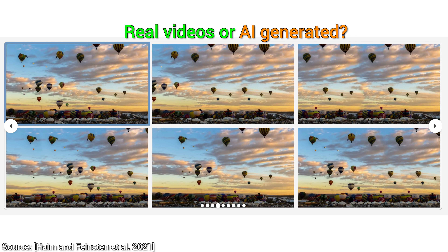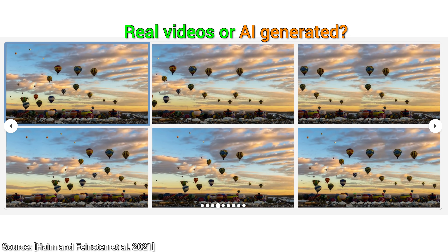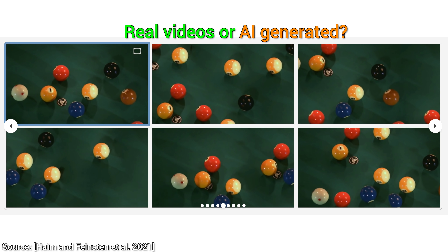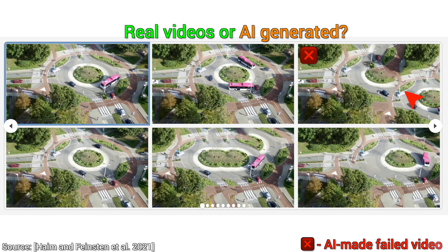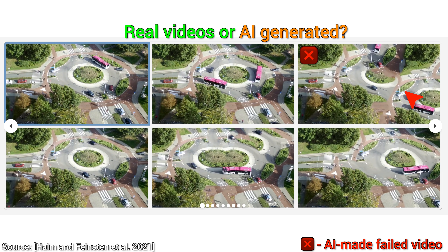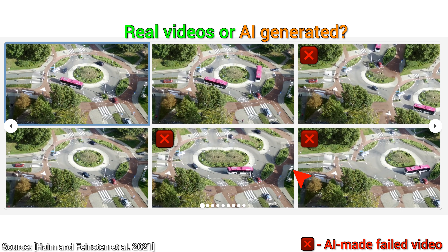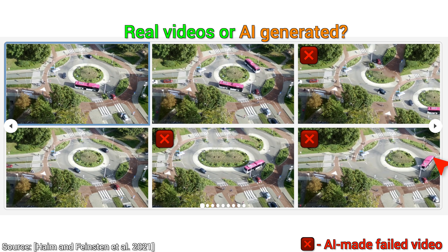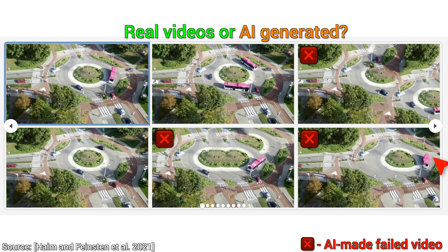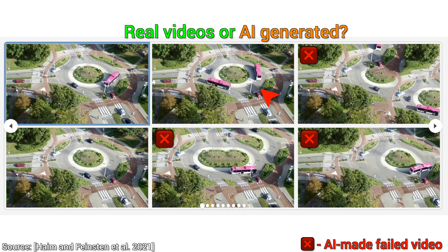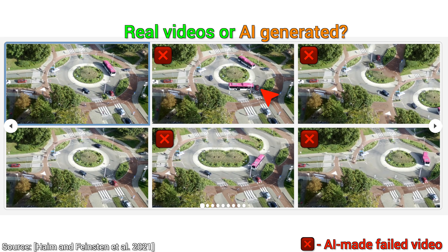Now, before we start, many of the results that you will see here will be flawed, but I promise that there will be some gems in there too. This one doesn't make too much sense — one down. Two, the bus appears to be changing length from time to time. Three, the bus pops out of existence. Four — wait, this actually looks pretty good until we find out that someone is about to get rear-ended.